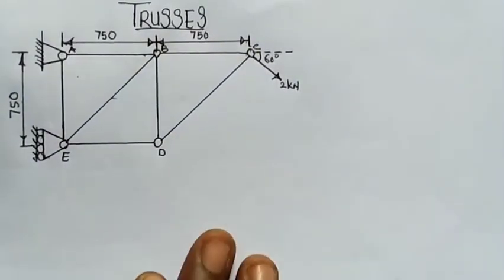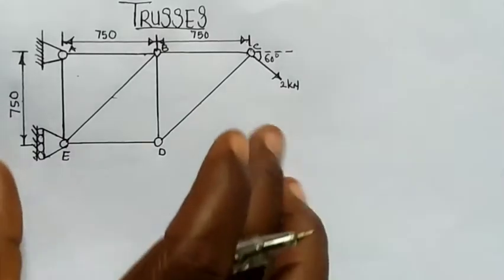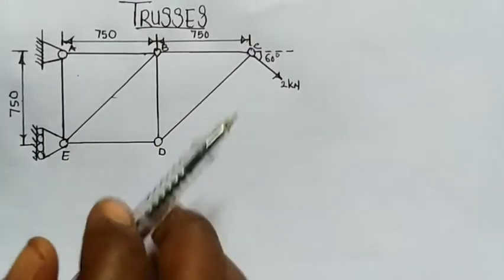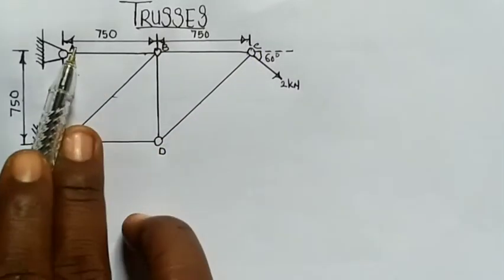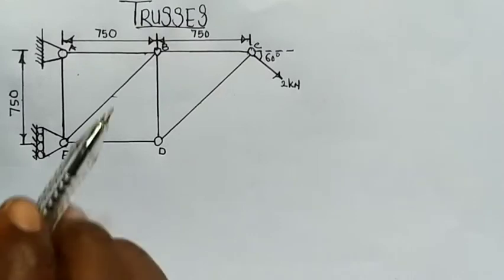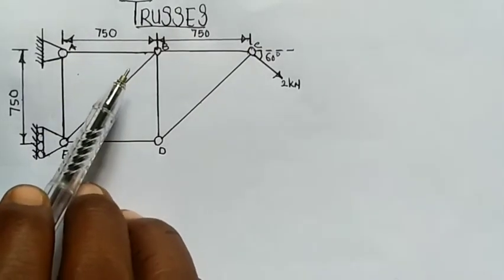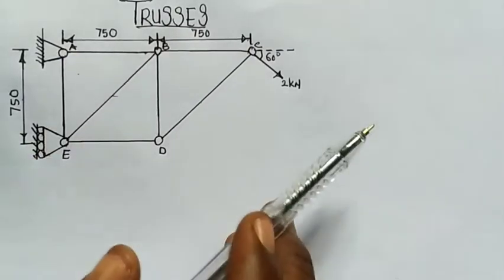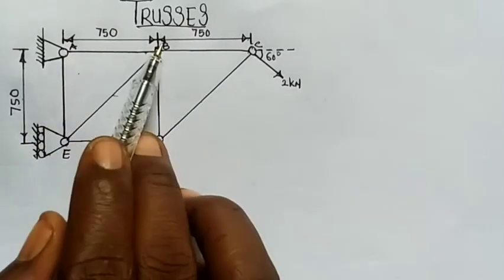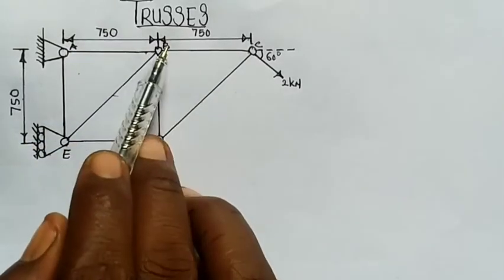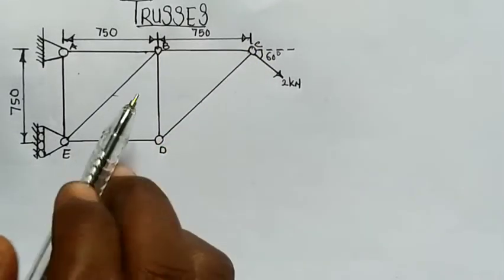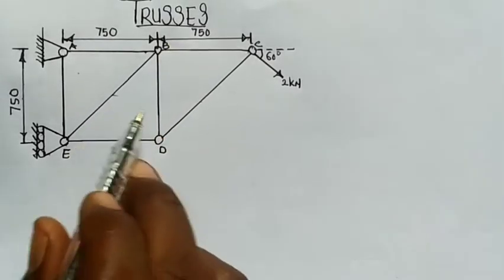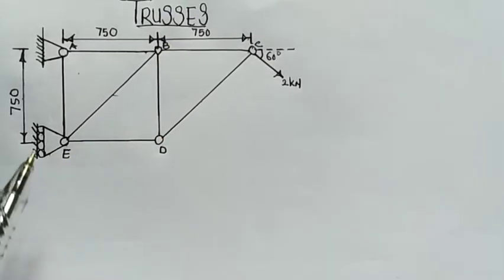Good day everyone, my name is Graphics. Today we'll be solving this exercise on trusses. We have a frame structure with points A, B, C, D, and E - also called joints. We are told to calculate the forces associated with each member: force in member AB, member BC, member CD, member DE, and also member BE.